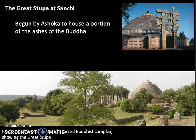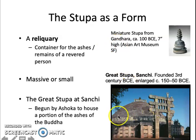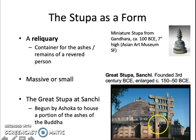What was originally a monastic complex. Let's talk about the stupa as a form — it has a function: it's a reliquary, a container for the ashes or remains of someone revered. It can be either massive, as the Great Stupa at Sanchi is, or it can be small — seven inches high. Here's a stupa from the region known as Gandhara, in the Asian Art Museum in San Francisco, from around 100 BCE. Very small, you can hold it in your hands. This one is monumental and massive — it is a grand statement because it is understood to hold part of the ashes, the remains of the Buddha himself.